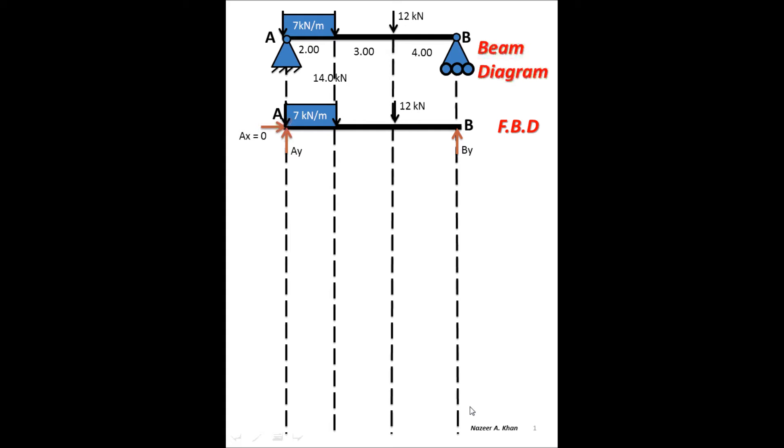Free body diagram means that you have cut a part of a structure away from the original structure and replaced the supports with forces. In this case, the supports are a pin support and a roller support. Pin support is associated with two forces, one horizontal, one vertical. Roller support, in this case, is one vertical force BY. With the requirements of an FBD, you're drawing it with a straight edge. You have to have all of the loading involved. If you don't have magnitudes, you're going to label them.